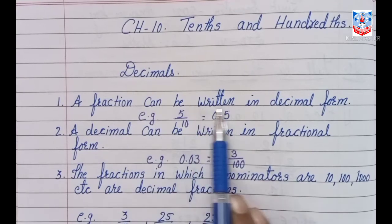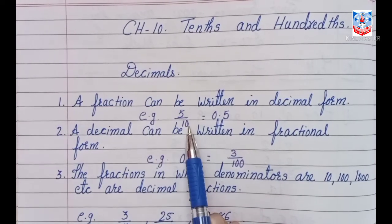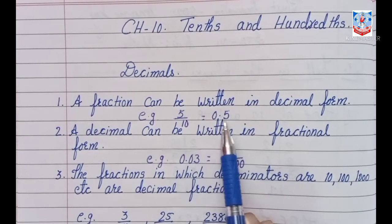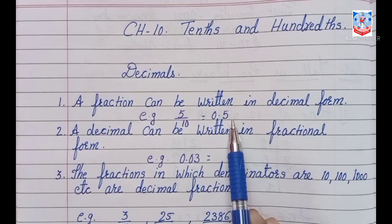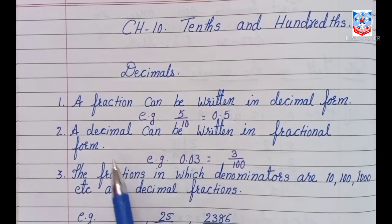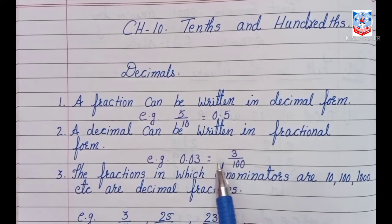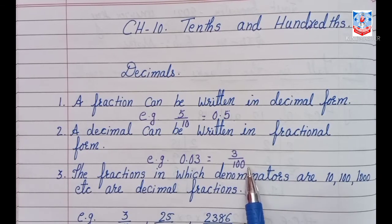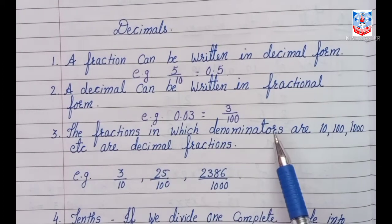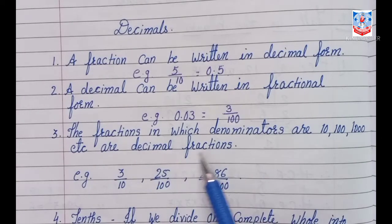First, a fraction can be written in decimal form. For example, 5 by 10 is in fraction form, and 5 divided by 10 is 0.5, which is in decimal form. The second point is a decimal can be written in fractional form. For example, 0.03 is in decimal form and its fractional form is 3 by 100. The third point is that fractions in which denominators are 10, 100, 1000 etc. are called decimal fractions.